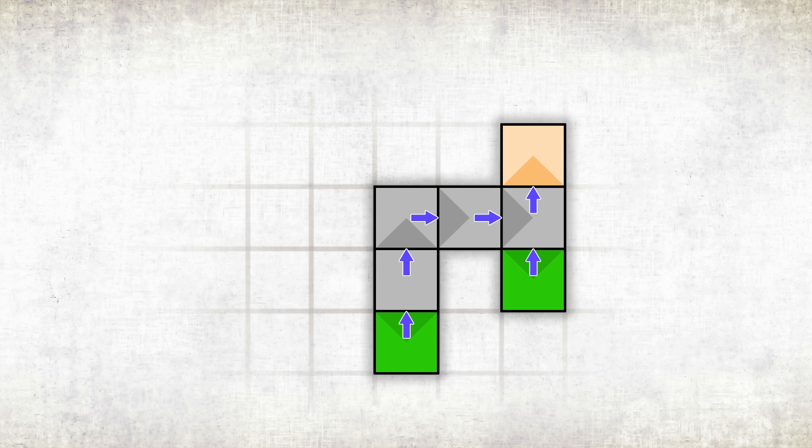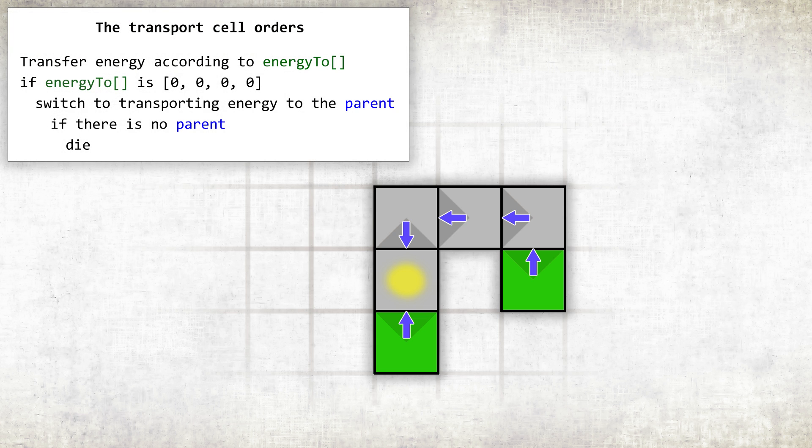The organism structure changes again and now energy from two green cells flows to one sprout. But now the last sprout has died too. The remaining transport cells begin to redirect energy to their parents. Now all energy flows to the origin cell of the organism. It has no parent and no place to transfer energy. Energy can be accumulated only by sprouts and seeds, which means this organism no longer has any sprouts or seeds. Its existence is meaningless, so the cell dies.